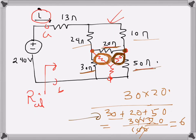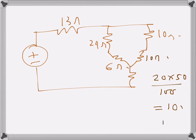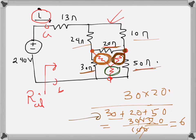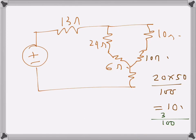Finally, for the bottom resistance, the denominator is again 100 as usual. The two resistances connected at this node in the delta connection are 30 ohms and 50 ohms, so the numerator is 30 × 50 = 1500 over 100, giving 15 ohms.